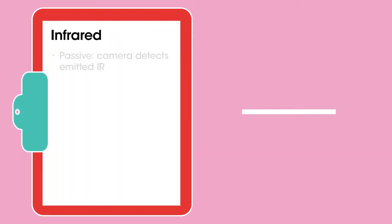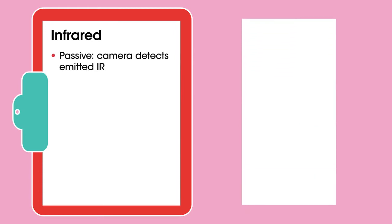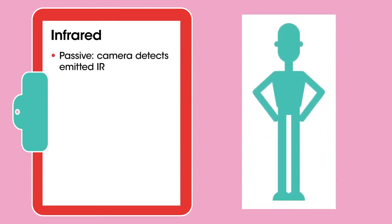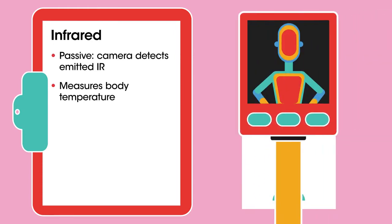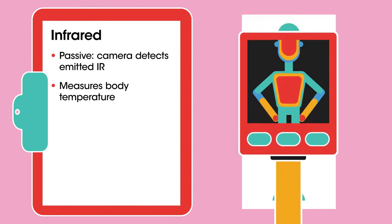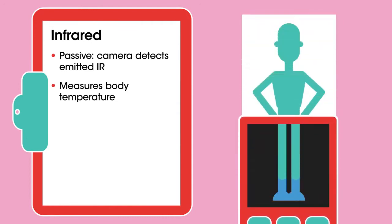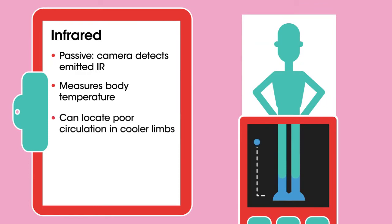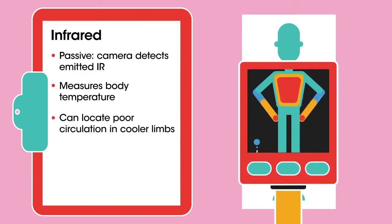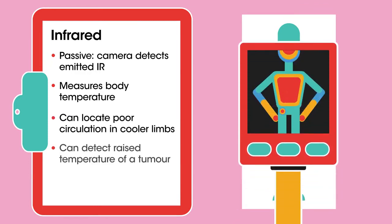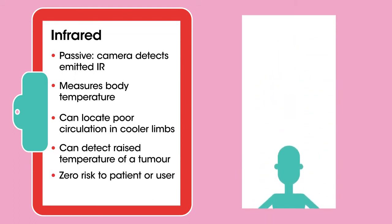Infrared. This is a passive imaging technique. The infrared camera merely detects heat given off by the patient. Detecting local variations in skin temperature may show regions with poor circulation or the presence of tumours. A slightly raised temperature can be a quick check for illness before symptoms have appeared. This is useful for scanning crowds in an airport, for example. There is zero risk unless you drop the camera on your foot.